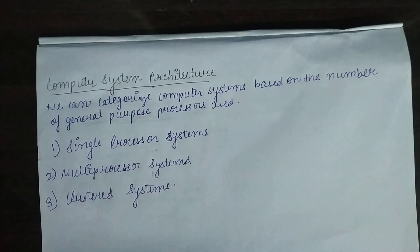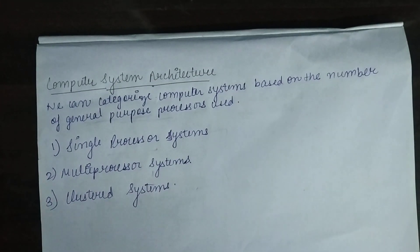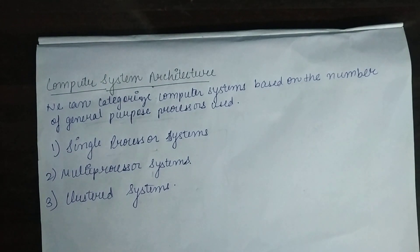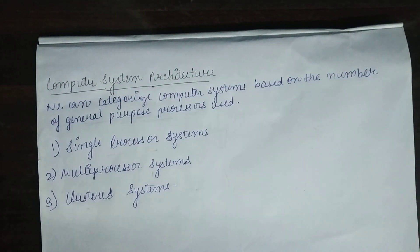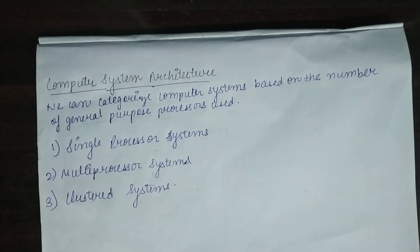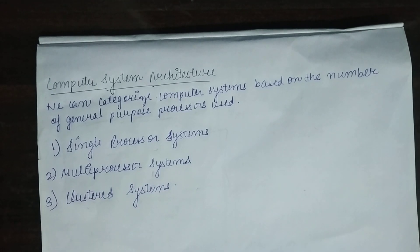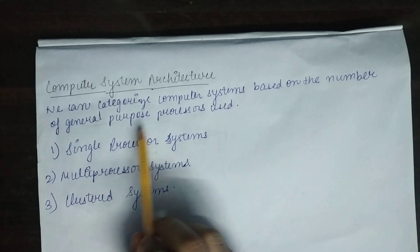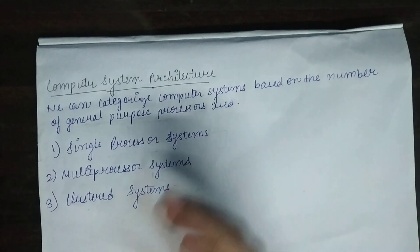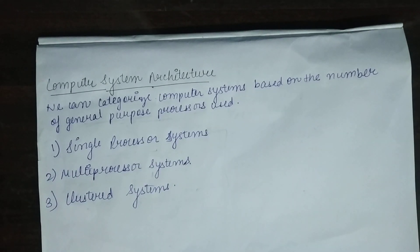A general purpose processor is your CPU. It is called general purpose because it is capable of executing a general purpose instruction set, including instructions from user processes.